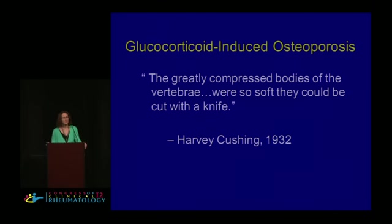Surprisingly, somebody else noticed this a long time ago. Harvey Cushing was doing autopsies in patients with Cushing syndrome — with too much glucocorticoid — and made note that the greatly compressed bodies of the vertebrae were so soft they could be cut with a knife. So something was clearly happening to the bone in patients with excess glucocorticoid.